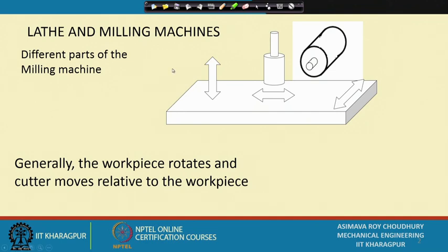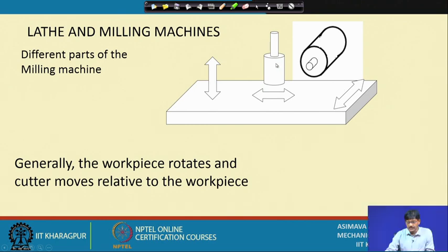The different parts of the milling machine: the first thing we get acquainted with is the table. This is the place where the operator directly interacts with the machine. The table can move vertically up and down, and assuming the table to be horizontal, it can move sideways — this is the longitudinal motion — and it can also move transverse, cross, towards or away from the operator. This is the typical configuration of a tool whose axis of rotation is vertical.